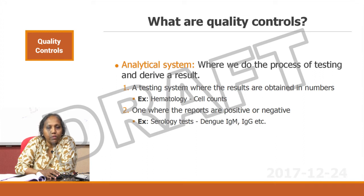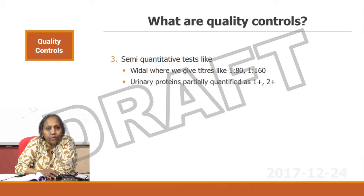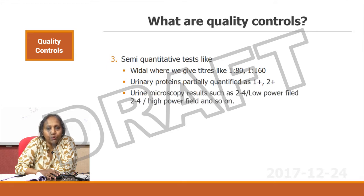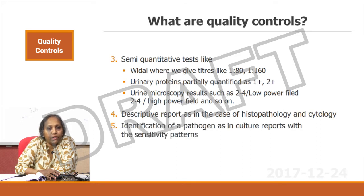It can be one where the reports are positive or negative, for example serology tests like dengue IgM, IgG, etcetera. It can also be a semi-quantitative test like Widal where we give titers such as 1:80, 1:160, or urinary protein partially quantified as 1+, 2+, or in urine microscopy results such as 2 to 4 per low power field, 2 to 4 per high power field, and so on. There are many ways of reporting, and another kind of test may be the descriptive reports as in the case of histopathology and cytology.